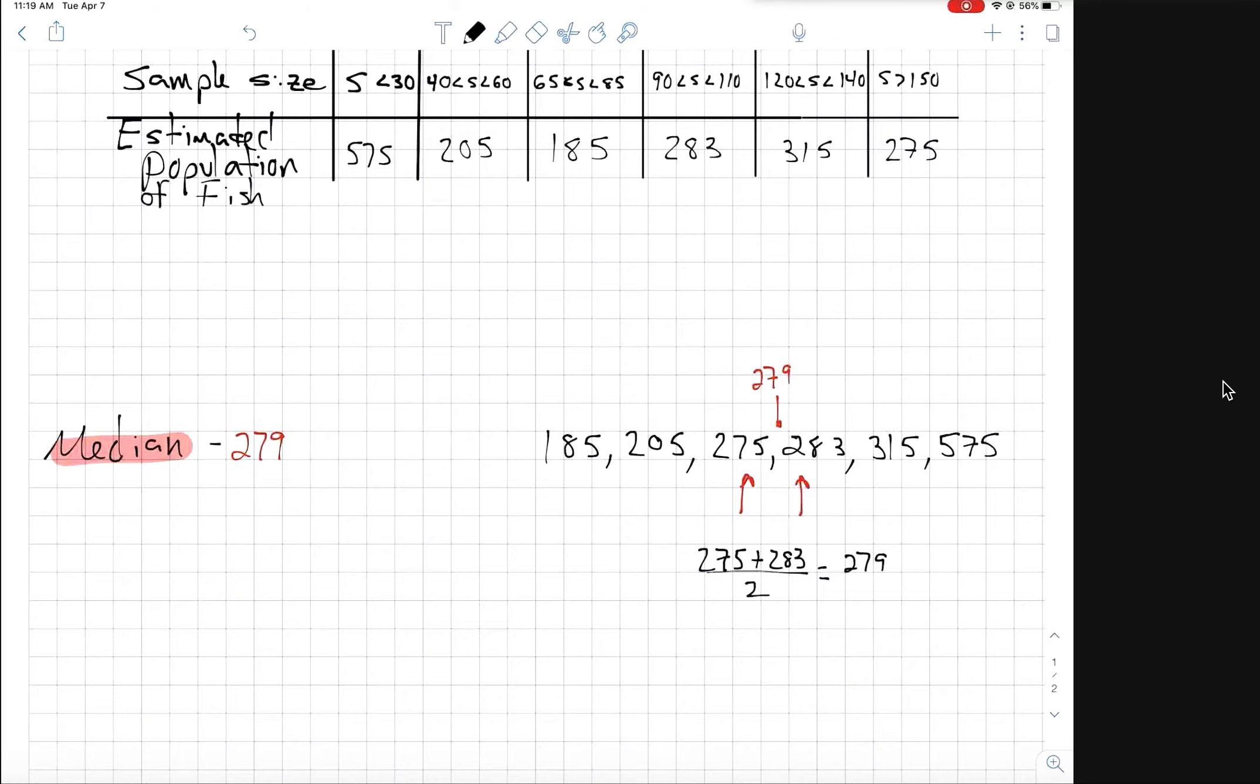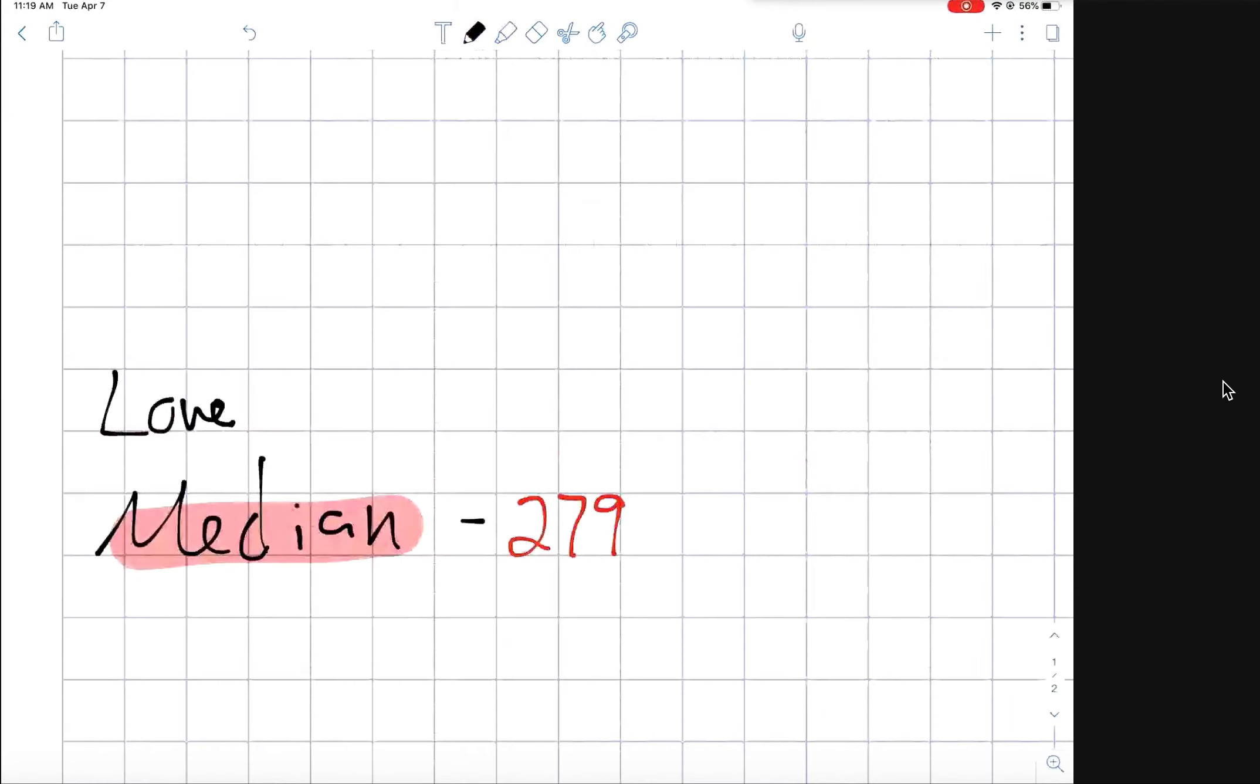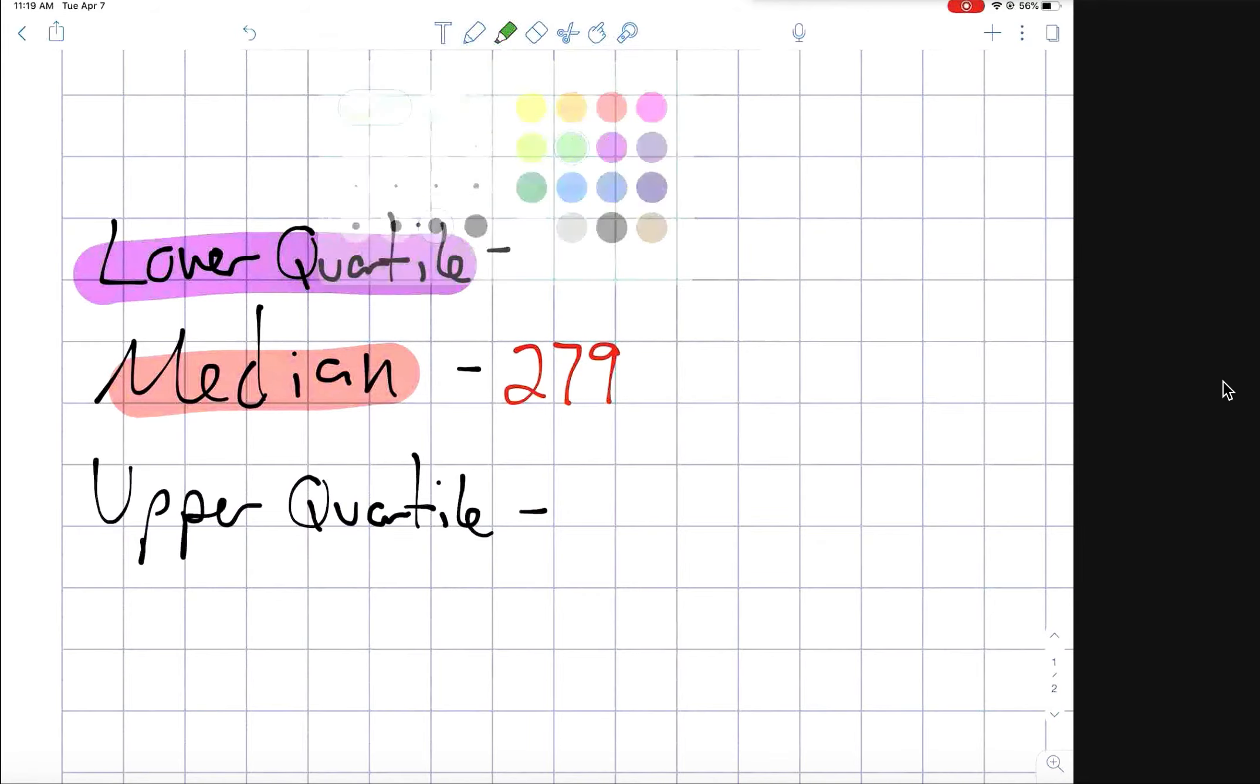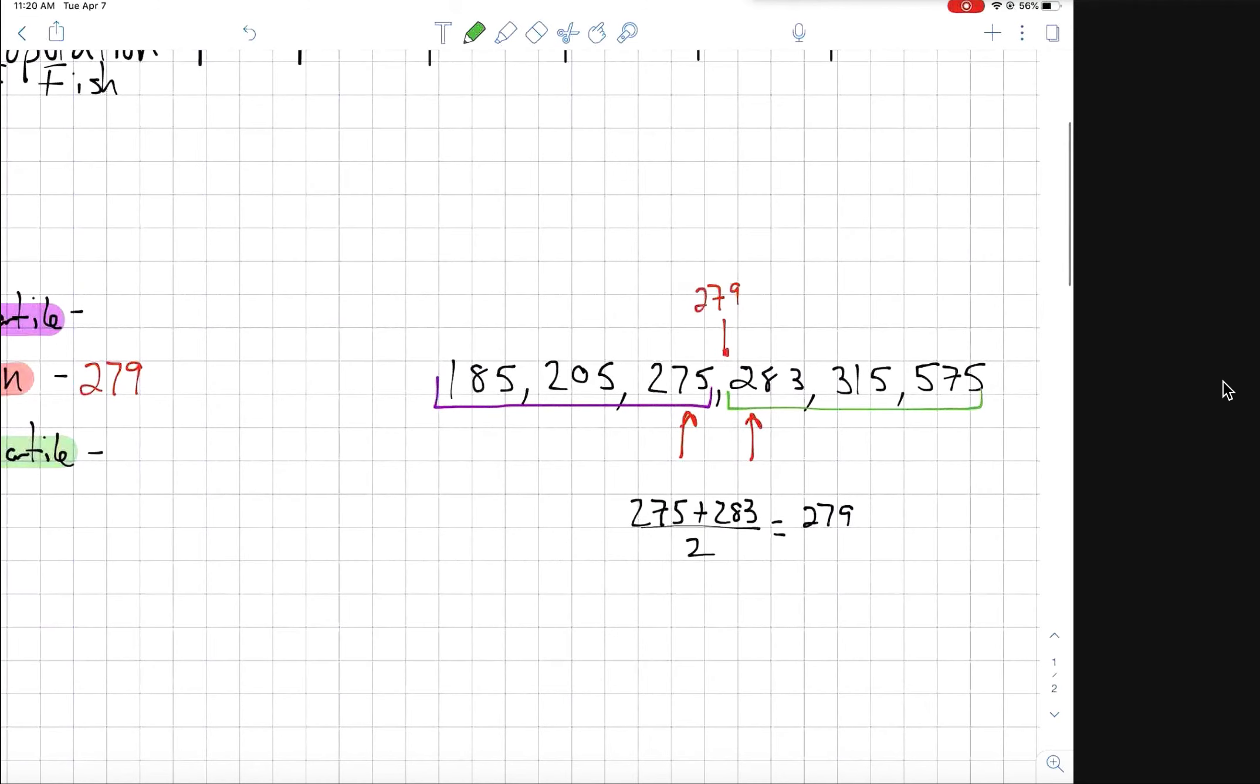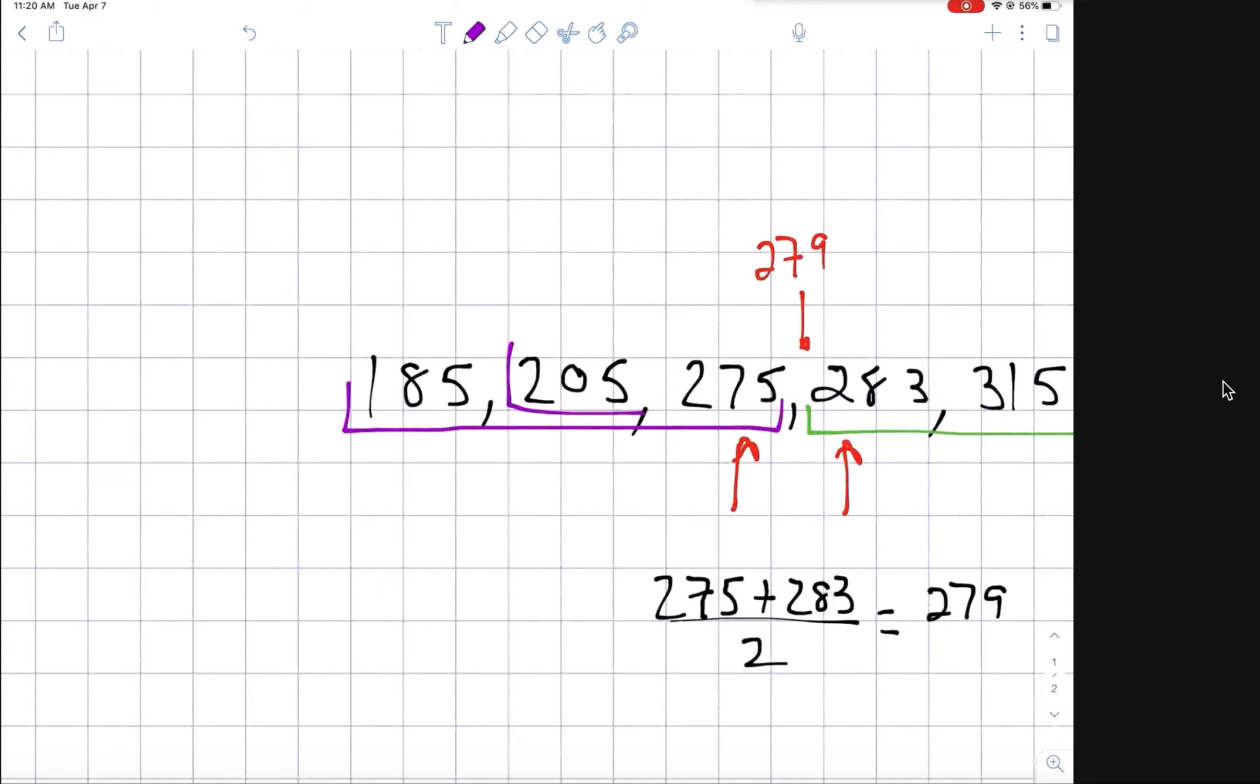Okay, so we're going to look at the lower quartile. So what is the value of the lower quartile? 205, yeah, that's correct. It's the number in the middle of our lower half of the data, so it's 205.